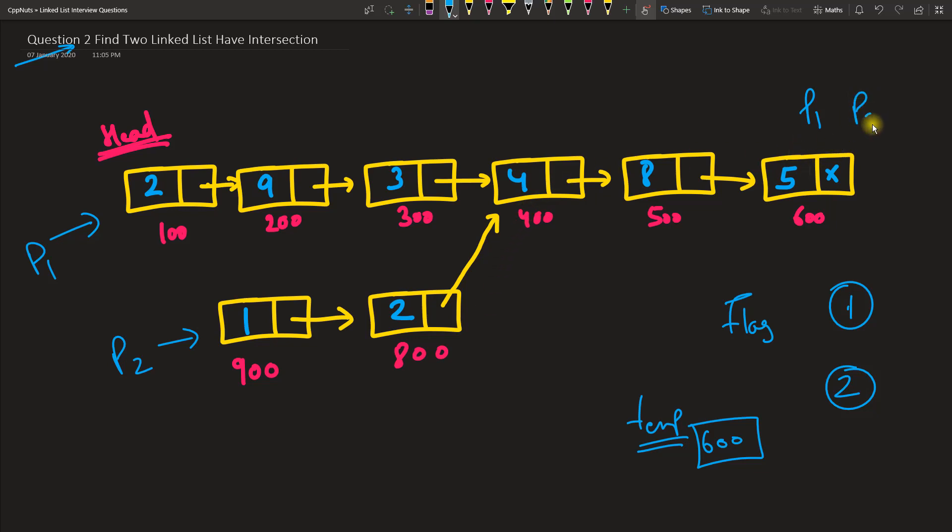Now you start with the second one. You will start from here and reach here, so p2 will also reach here, and p2 will see that the already stored address is also 600, and I also reached 600. So we both are reaching to the same destination, so that's why there is an intersection.